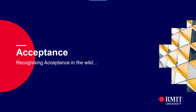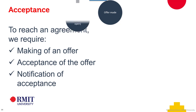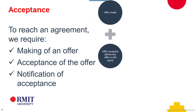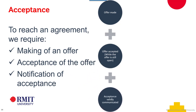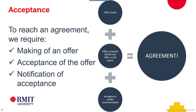Let's talk about acceptance and how we recognise acceptance in the wild. To reach an agreement we need to have an offer. That offer needs to be matched by an acceptance while the offer is still open. And the acceptance has to be validly communicated. Do all of those things and we have an agreement for the purposes of common law.